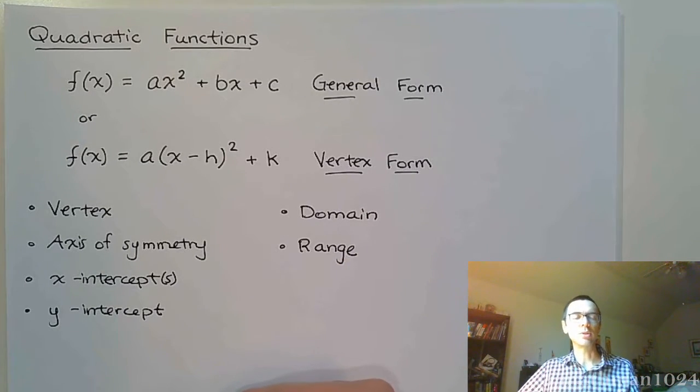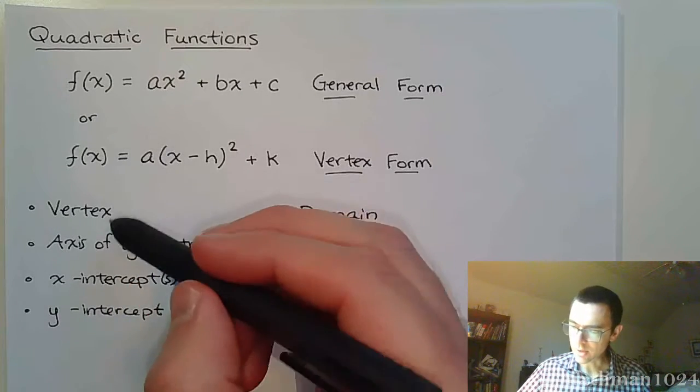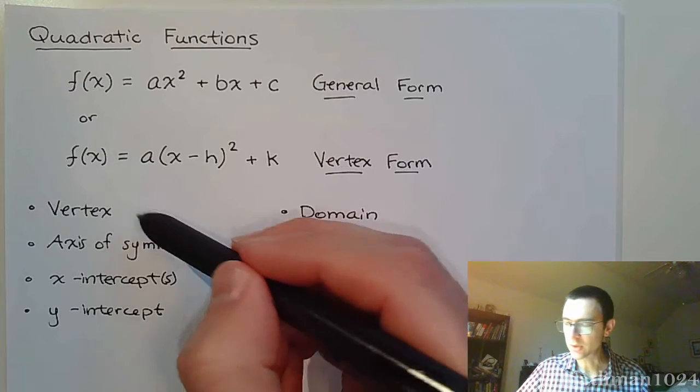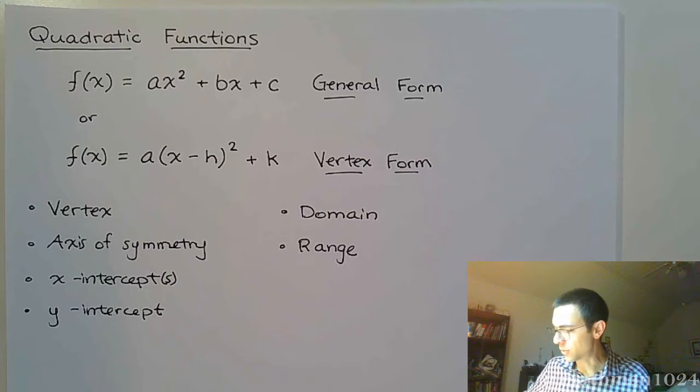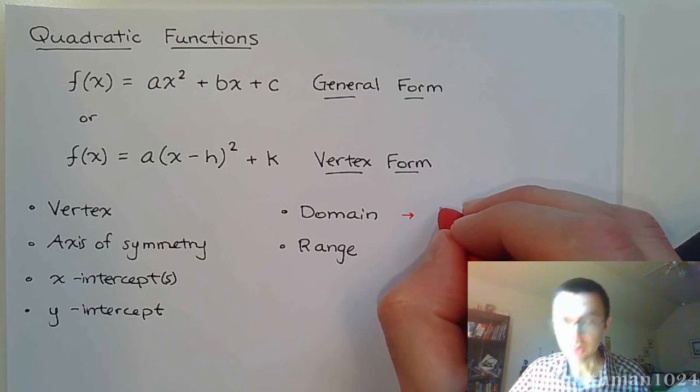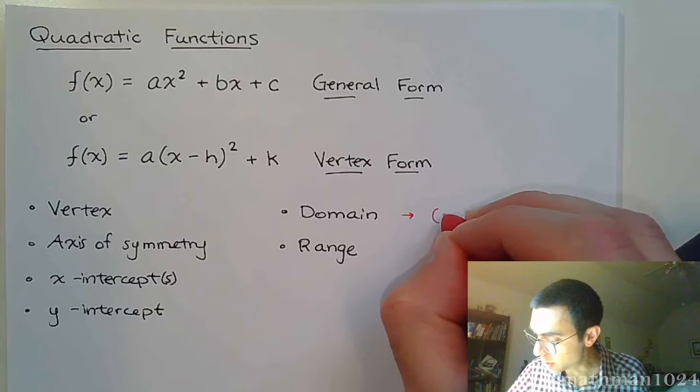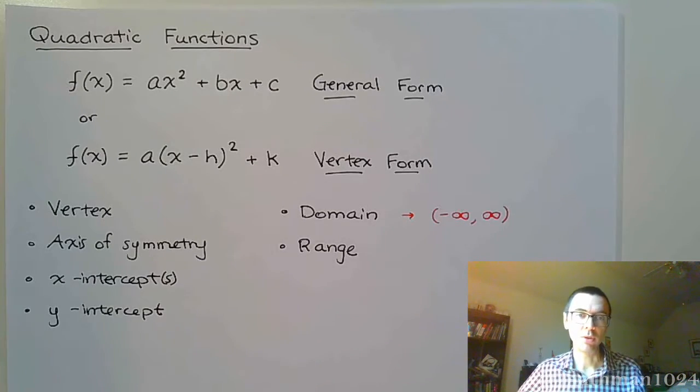Find the domain and find the range. These are the questions I'm going to be looking for. I'm going to give you a quadratic function and I'm going to say find all of this information. The vertex and the axis of symmetry are very closely related. The domain, here's a spoiler for you. For all of these quadratic functions that we have, and really for any polynomial function, the domain is going to be all real numbers.